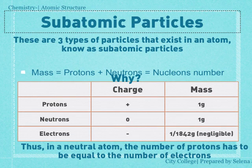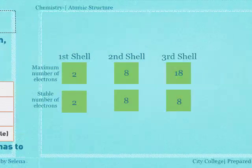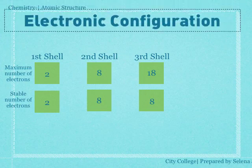First shell, second shell, and third shell. First shell contains 2 electrons, second shell 8. Third shell is supposed to be 18, but at O-level just remember to go up to 8.